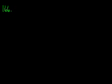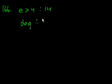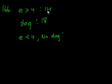Problem 166. Of 30 applicants for a job, 14 had at least four years of experience, 18 had degrees, and 3 had less than four years of experience and did not have a degree. How many of the applicants had at least four years of experience and a degree? There are 30 applicants for a job.